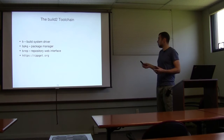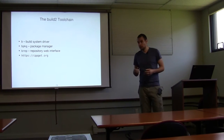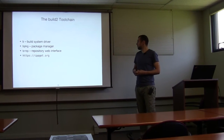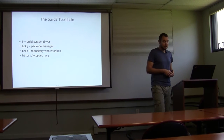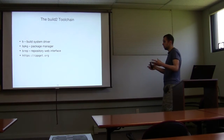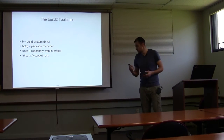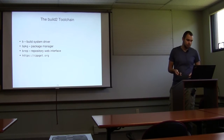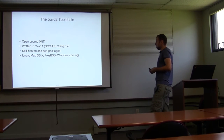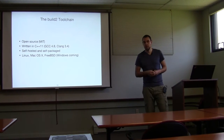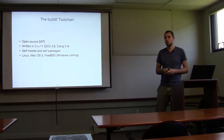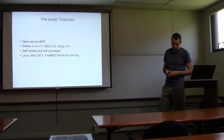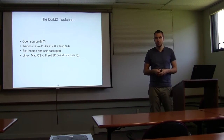Quick overview: it's a toolchain, not a single tool. We have the build system driver called B — we named it B because make is too long to type. There's the package manager called bpkg, a repository web interface which is an Apache module written in C++, and cppget, the public repository of open source packages. It's open source, MIT license, written in C++14. Minimum requirements: GCC 4.8, Clang 3.4. Planning to support Visual Studio 2015 or later. Self-hosted and self-packaged.